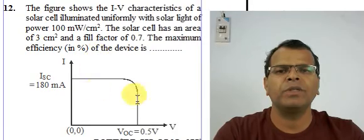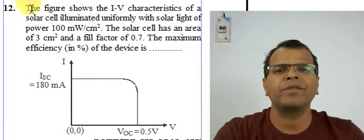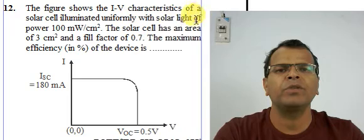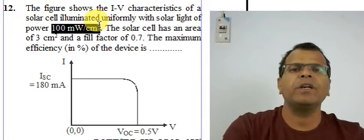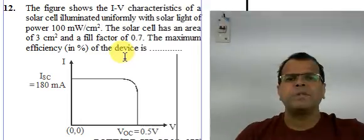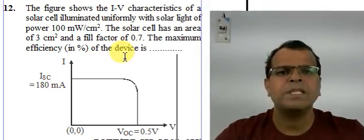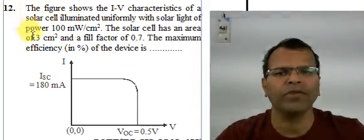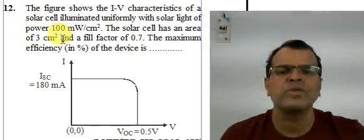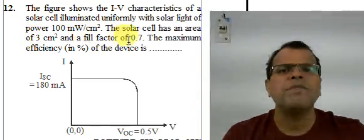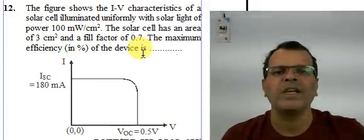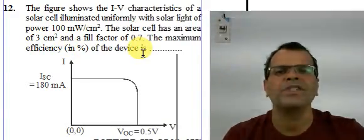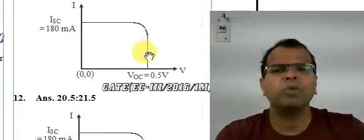The next question shows the IV characteristic of a solar cell illuminated uniformly with solar light of power 100 milliwatt per centimeter square. The solar cell has an area of 3 centimeter square. The fill factor is 0.7. You need to find the maximum efficiency of the device.